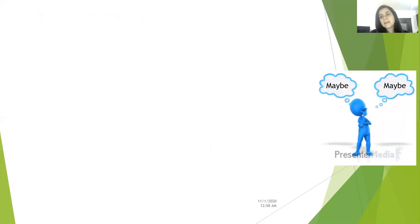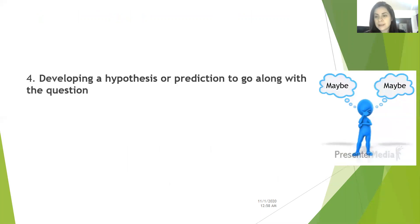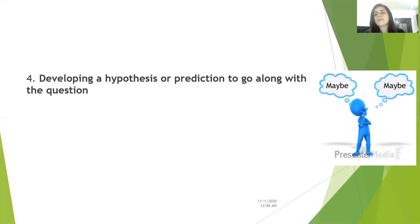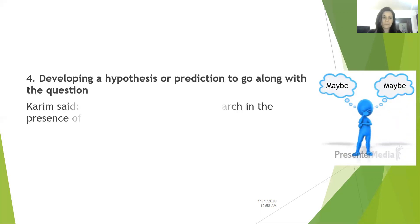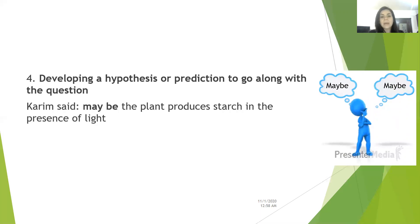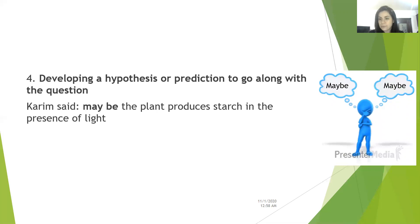Karim said maybe — and 'maybe' is the hypothesis. All the time when I want to write a hypothesis, it should contain a term that shows prediction or suggestion, like 'maybe' or 'possibly.' So Karim said: maybe the plant produces starch in the presence of light. This was his hypothesis.